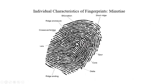Now, other types of individual characteristics: there can be a short ridge, there can be a spur. You see the core, which is the center around the flow of the fingerprint. There's the delta, as mentioned previously. There's a ridge ending, a lake, a crossover or bridge, a ridge enclosure, a bifurcation, or it could also be a trifurcation if there are three coming off of it. Keep in mind there are other examples of minutiae, but these are just some of them to look at.